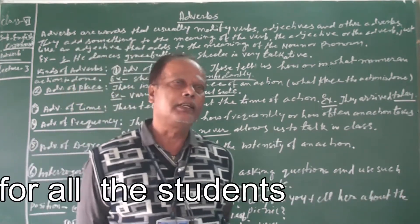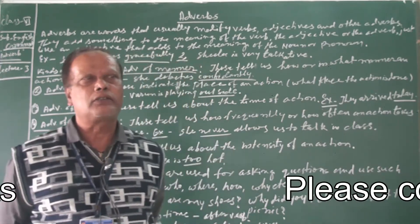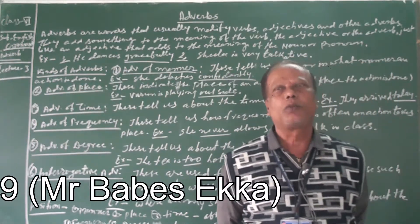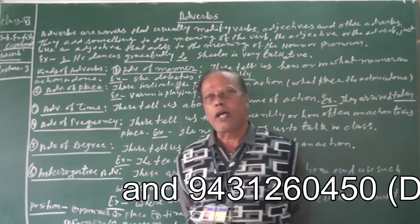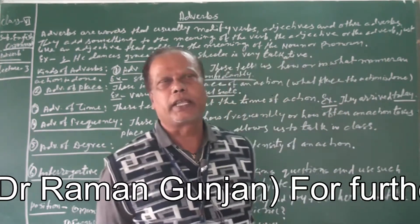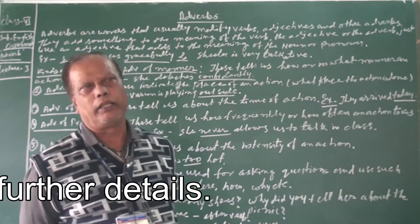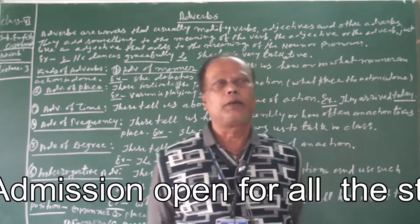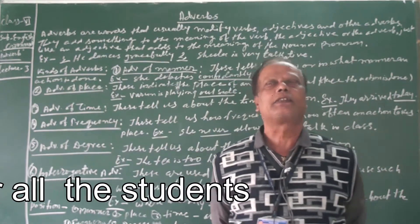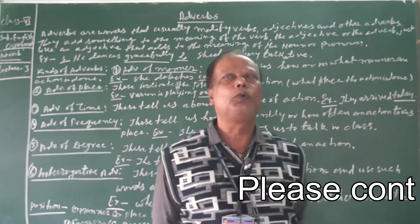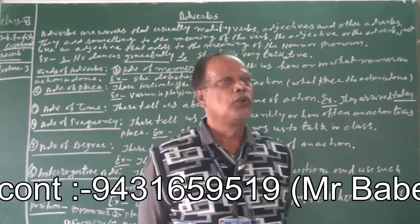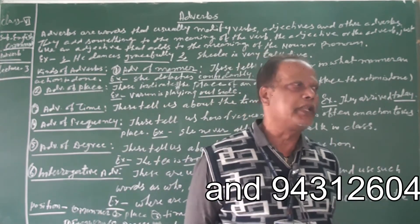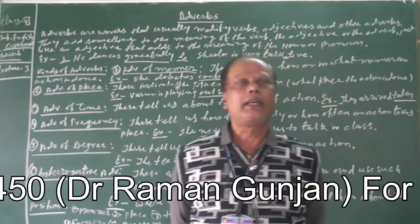An interrogative sentence can start in two ways: one, with an auxiliary verb, or two, with a question word. When we ask a question with an auxiliary verb, it can only be answered with yes or no. On the other hand, we have WH questions — called so because all English question words contain the combination of W and H.